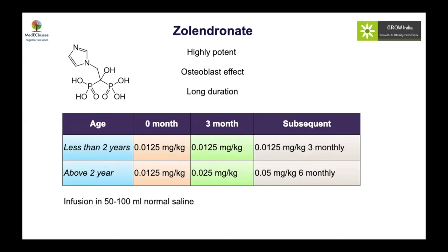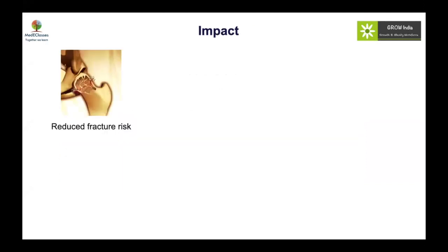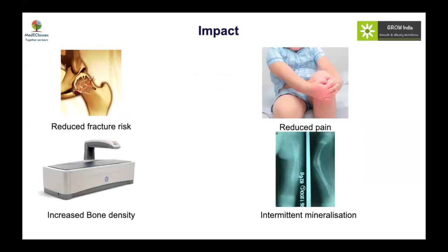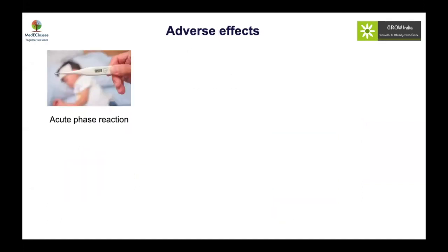The error in the second case was using a higher dose of 0.25 mg/kg rather than the appropriate lower dose. Zoledronate is a single injection, once a year, but acute phase reactions may occur. With bisphosphonate use, fracture risk decreases, pain improves, and bone density increases. However, intermittent mineralization can occur — areas with more mineral and areas with less — which may predispose to poor bone quality, and atypical fractures should be watched for.